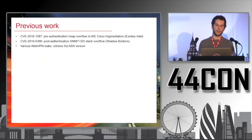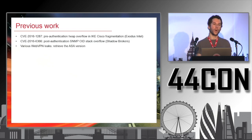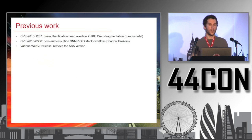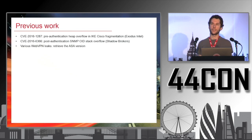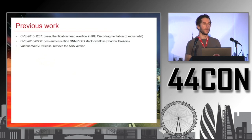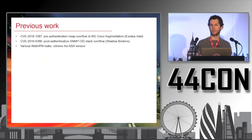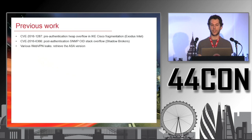This research was based on the fact that a few vulnerabilities were released last year, and we wanted to know what was the impact. We looked at the Exodus Intel IKE heap overflow in the Cisco fragmentation payload. This bug is quite important in that it's pre-authentication — IKE is used to establish a VPN, and it's the protocol to negotiate the VPN connection. It's pre-authentication and usually available on the internet.